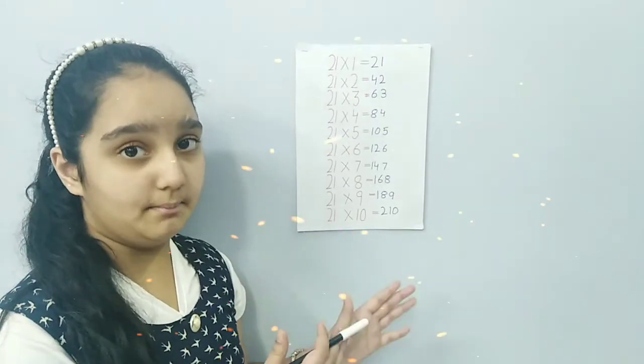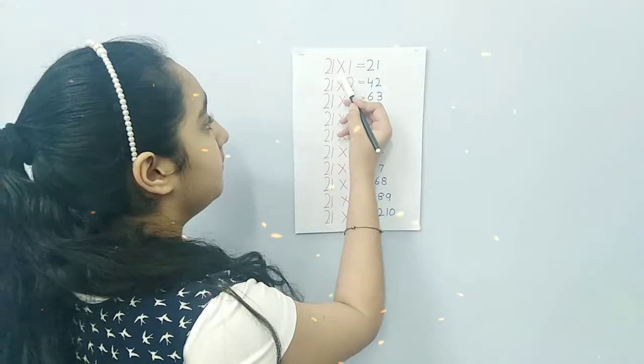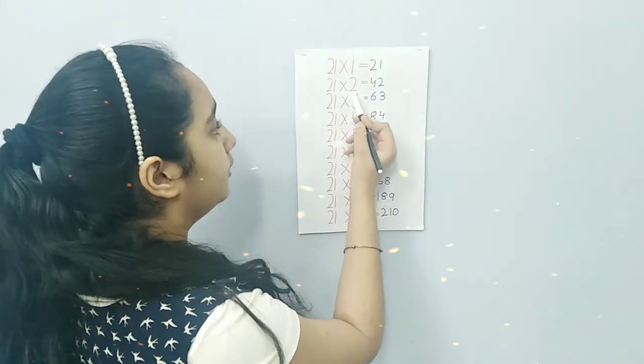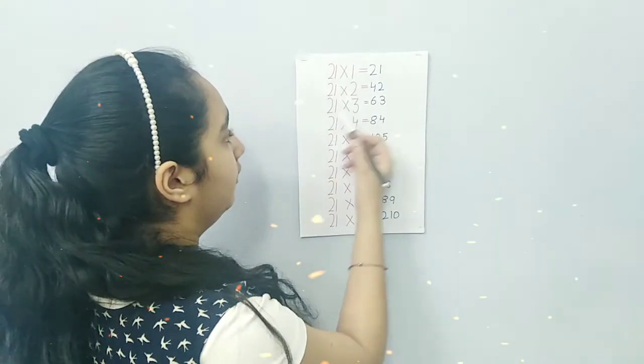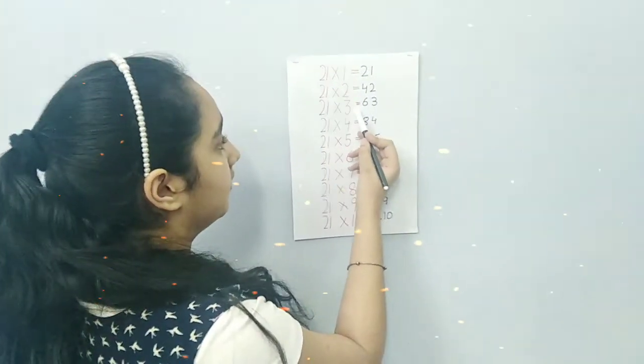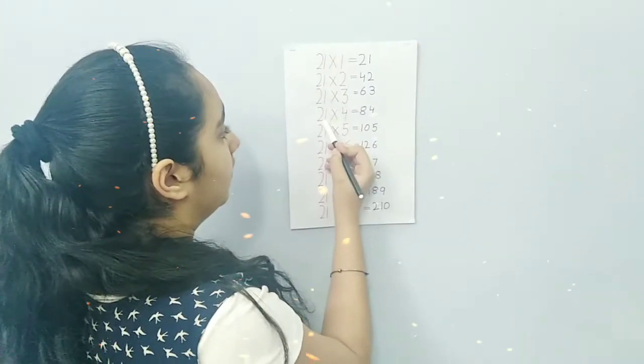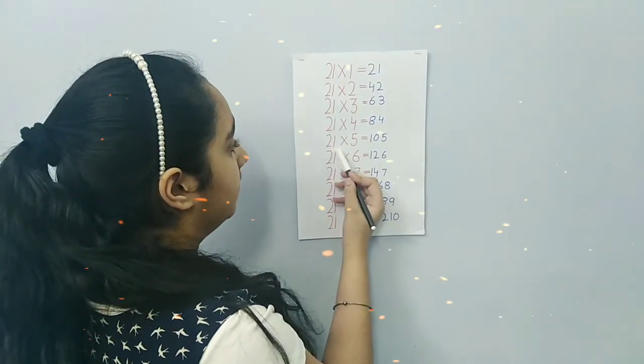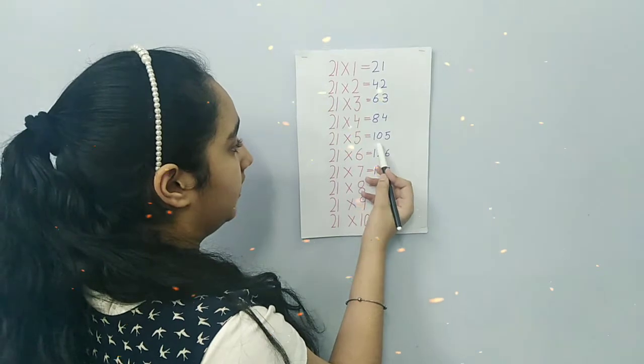This is the 21 table. 21 by 1 is equal to 21, 21 by 2 is equal to 42, 21 by 3 is equal to 63, 21 by 4 is equal to 84, 21 by 5 is equal to 105.